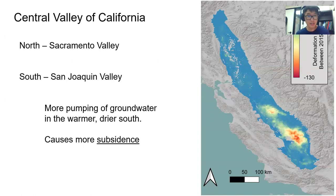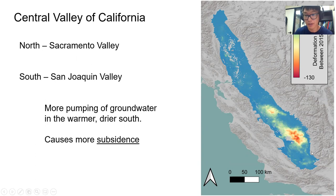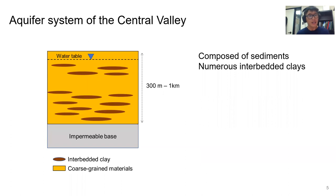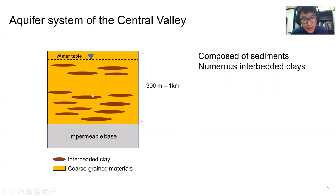The Central Valley of California is composed of the Northern Sacramento Valley and the Southern San Joaquin Valley. In the Southern San Joaquin Valley, more pumping of groundwater in the warmer, drier south causes more subsidence, as you can see in this map of surface deformation. Red color means large subsidence of about 25 centimeters per year. The aquifers are composed of mostly sediments like clays and coarse-grained materials like sand and gravel, with numerous interbedded clays embedded in the coarse-grained materials, and an impermeable base.